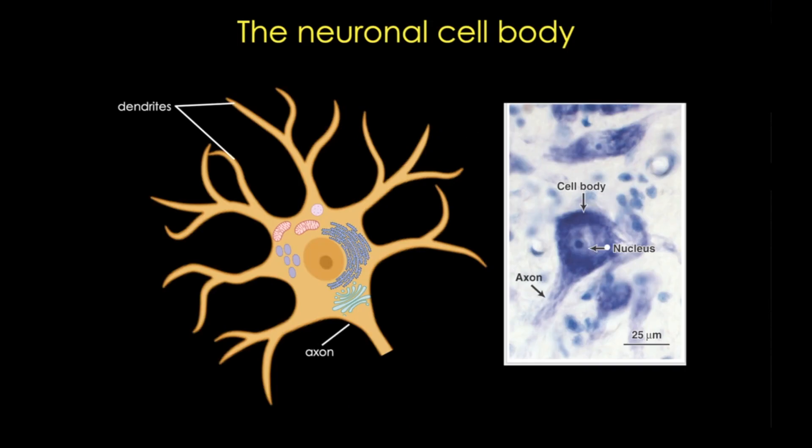Here we have both a cartoon and a Nissel-stained image showing the cell body. The cell body can range from very small, let's say for a granule cell of CNS, to 100 microns in a larger neuron. But in general, the bulk of the neuron mass isn't found in the cell body.